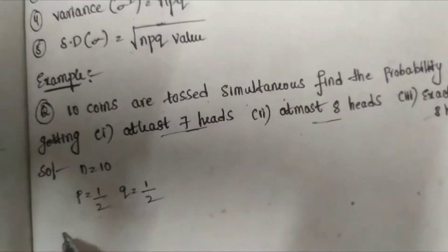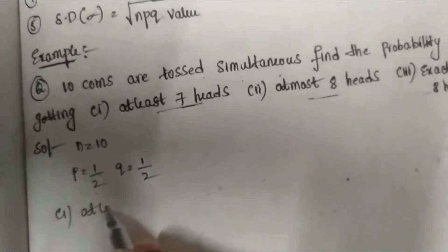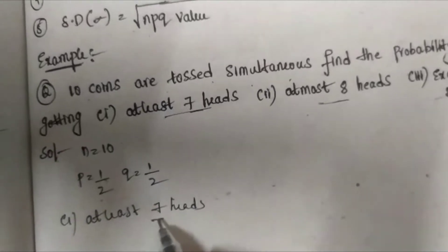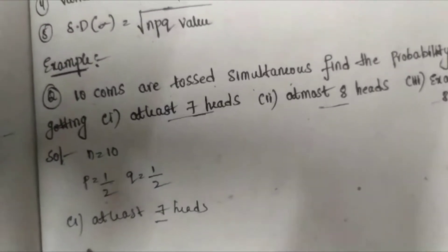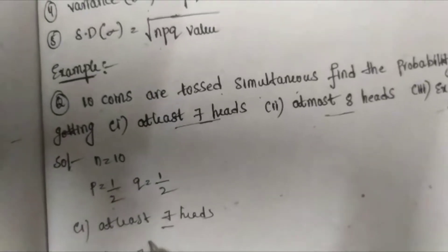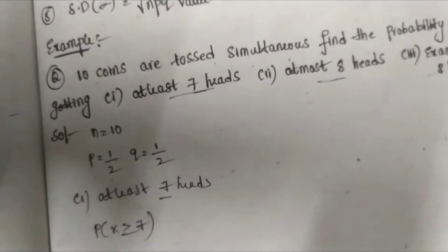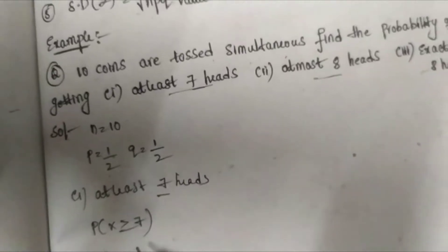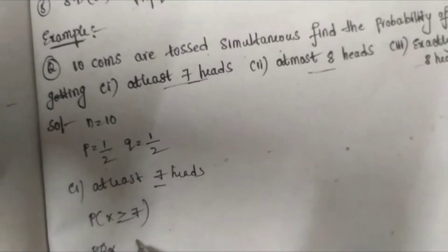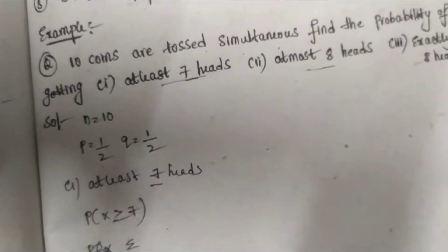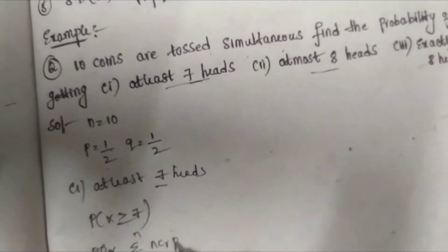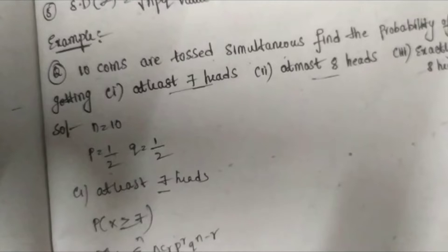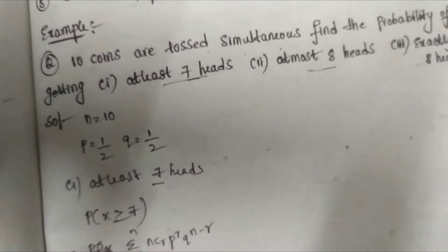First one: at least 7 heads means minimum 7 and greater than 7, that means P(X ≥ 7). We know the formula for binomial distribution: summation r = 0 to n of nCr * p^r * q^(n-r). Here P(X ≥ 7) means r = 7, 8, 9, 10.